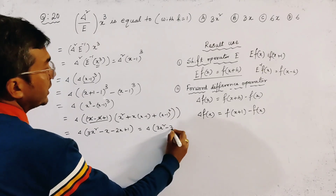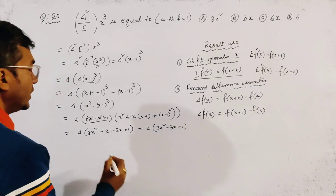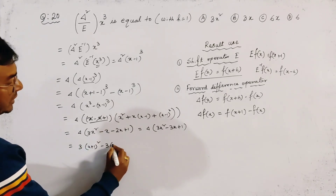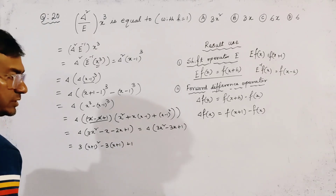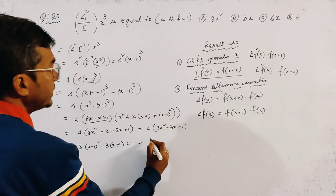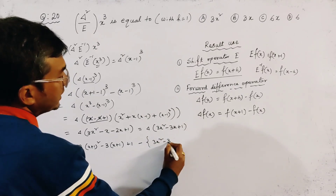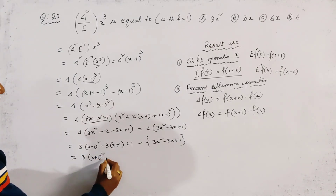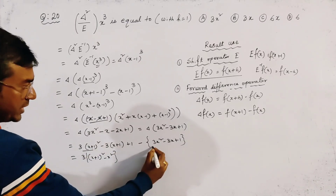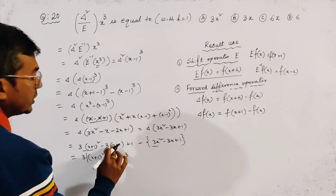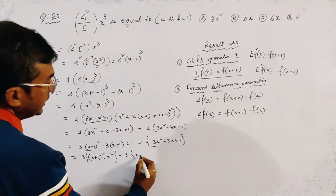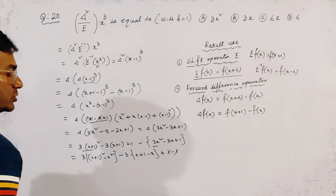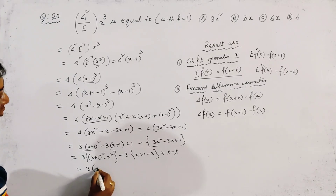Applying the definition of Δ, we get 3(x+1)² minus 3(x+1) plus 1 minus (3x² minus 3x plus 1). Expanding: 3x² + 6x + 3 minus 3x minus 3 plus 1 minus 3x² plus 3x minus 1. The constant terms and x² terms cancel out, leaving 6x.